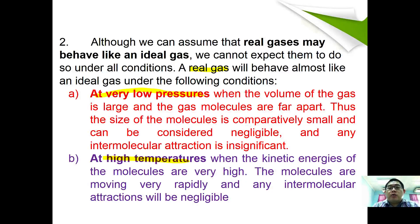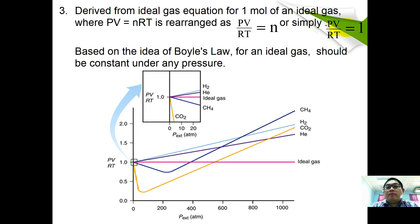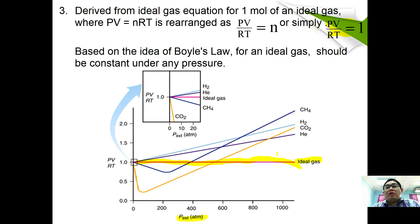Real gases also behave like ideal gases at high temperature, where kinetic energy is very high and molecules move at very high speed, making intermolecular forces negligible. For an ideal gas, pV = nRT, rearranged as pV/nRT = 1. On the graph of pV/RT against pressure, ideal gas always remains at the line n = 1 regardless of applied pressure.